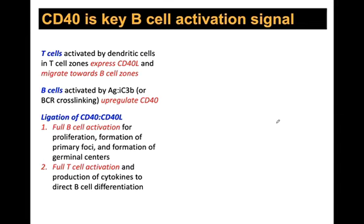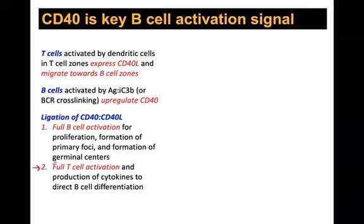Full B cell activation — confirmed by complement, then by linked recognition with T cells via CD40/CD40L — drives B cells to form germinal centers and undergo somatic hypermutation, affinity maturation, isotype switching, and differentiation into memory cells and plasma cells. The interaction also works the other way: the T cell confirming a B cell has its antigen tells the T cell to fully differentiate into an effector T cell. CD4 T cells then produce cytokines that direct the B cell response — for example, a Th2 response producing cytokines directing IgE production.